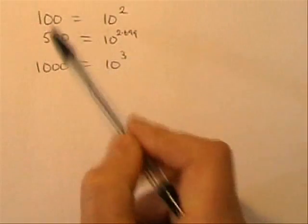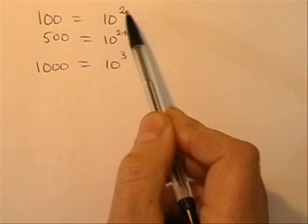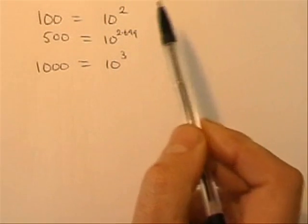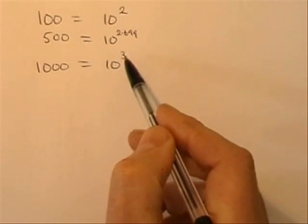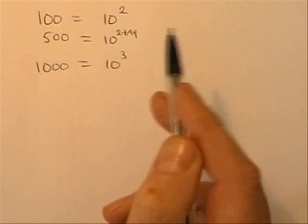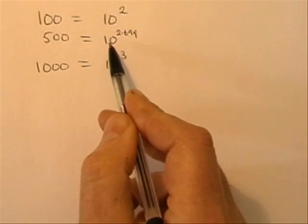So the number that we are trying to find, it's 10, which is the base, raised to a certain power. So we could say that 2 is the power you use with 10 to get 100. 3 is the power you use with 10 to get 1000. 2.699 is the power that you use with 10 to get 500.